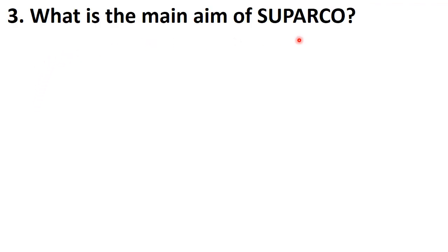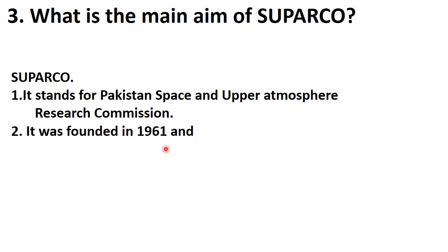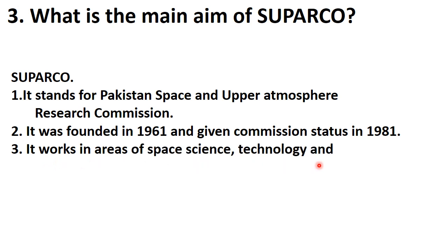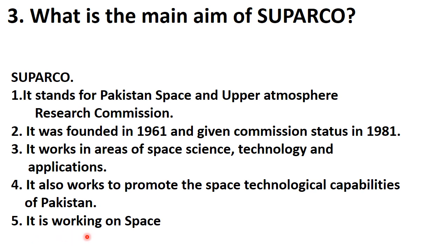What is the main aim of SPARCO? SPARCO stands for Pakistan Space and Upper Atmosphere Research Commission. It was founded in 1961 and given commission status in 1981. It works in areas of space science, technology, and applications. It also works to promote the space technological capabilities of Pakistan. It is working on Space Program 2040 since 2011. This is the main aim of SPARCO as given in the book.